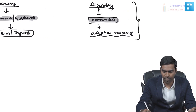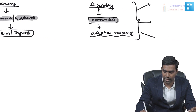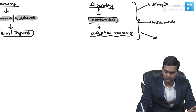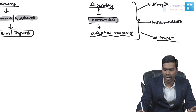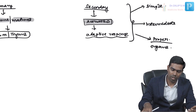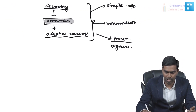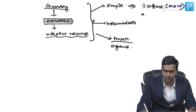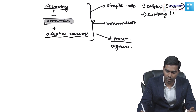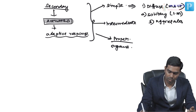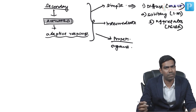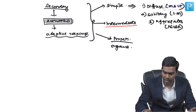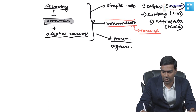The secondary lymphoid organs can be classified into three groups: simple tissues, intermediate, and proper organs. Simple tissues include diffuse tissues (also called MALT — mucosa-associated lymphoid tissue), solitary lymphoid tissues seen in the intestinal mucosa, and lymphoid aggregates seen as Peyer's patches in the ileum.